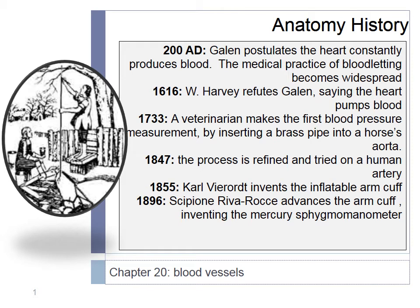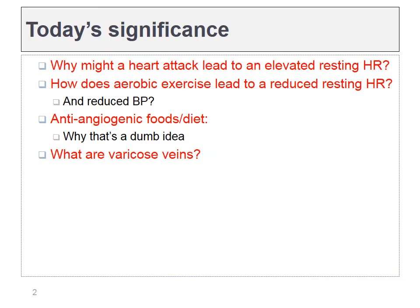Chapter 20, the circulatory system. In today's lecture, we need to answer and understand two very important questions. First, why might a patient have a higher resting heart rate following a heart attack? Secondly, why does aerobic exercise lead to a reduced resting heart rate and blood pressure, and why is this healthy? We'll also talk about anti-angiogenic foods and why that's a dumb idea, even if they could work.